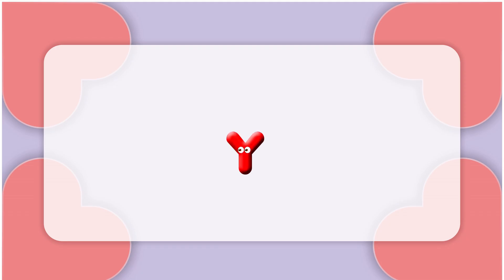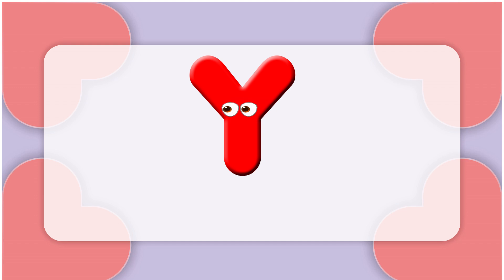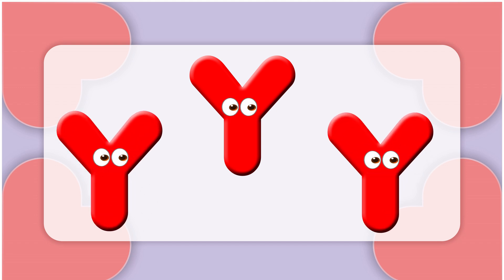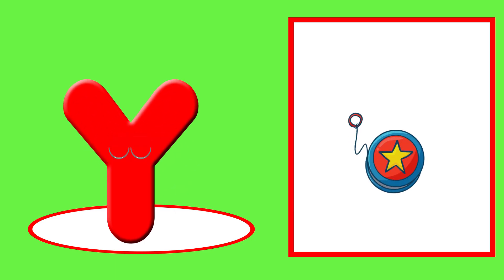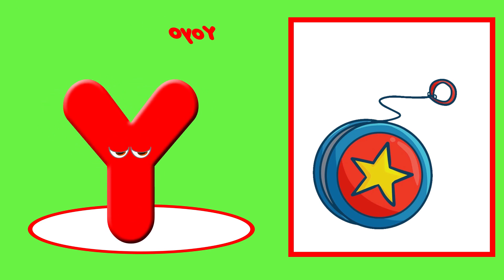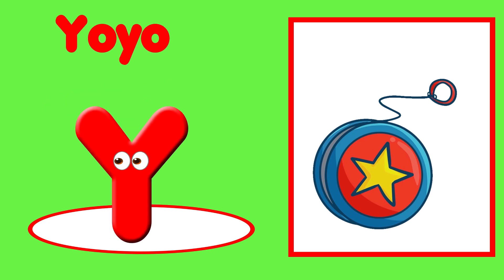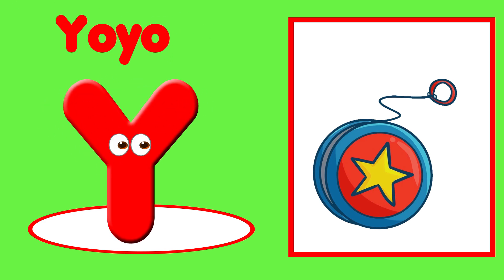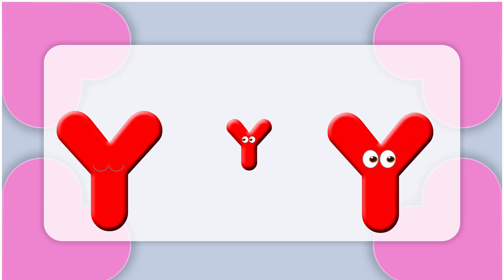This is the letter Y. Y is for yo-yo — y, y, y. Y is for yellow — y, y, y.